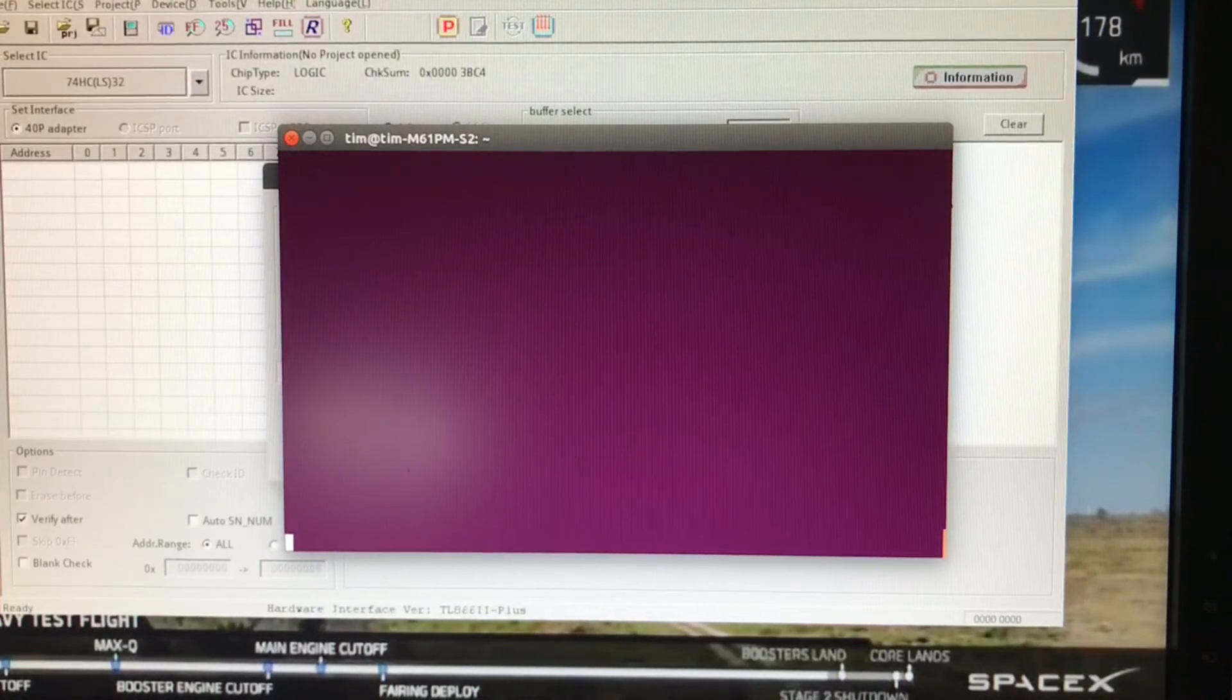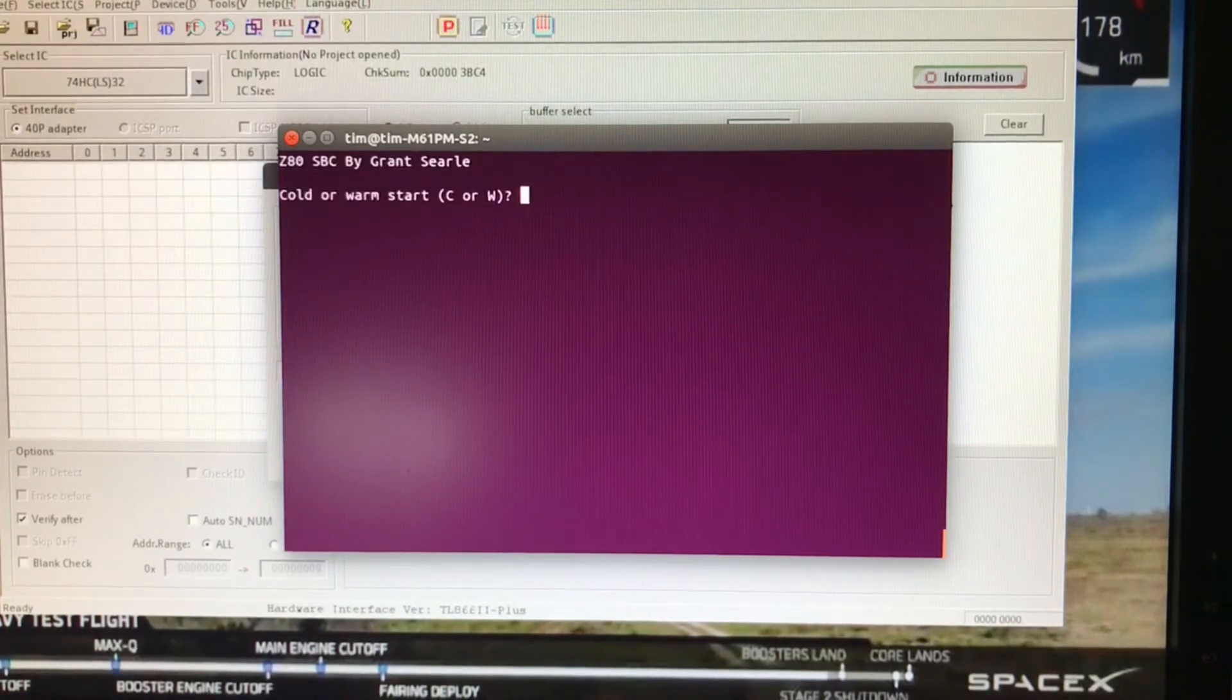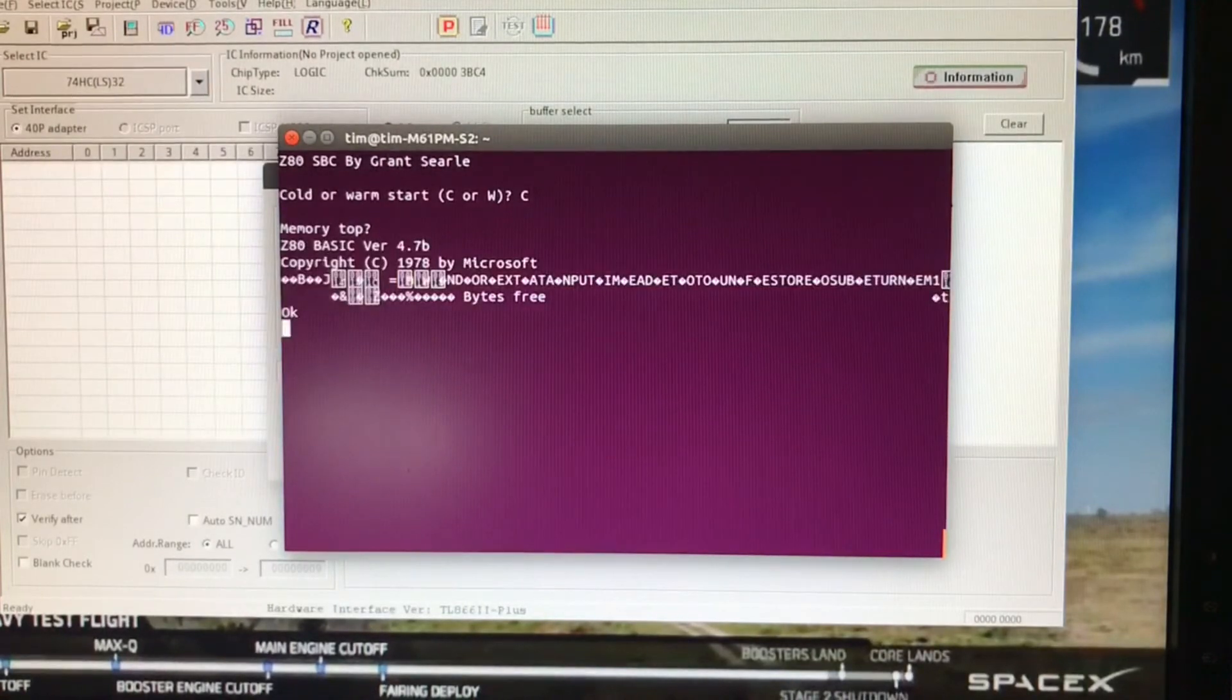It took a bit of a stab in the dark that we were going to have address decoding errors. Let's press reset, I'm going to do a cold start. Cold memory... no. Still, it's been running okay for a while until I tried to show it on video of course. I swapped the 74LS32 for another one and it seems to take longer before the fault comes.